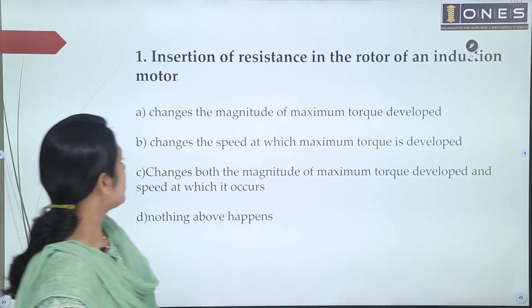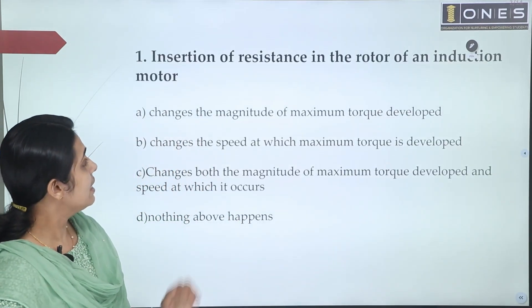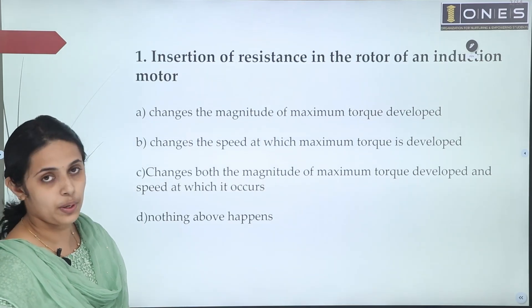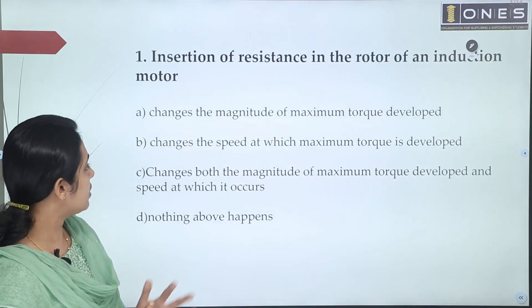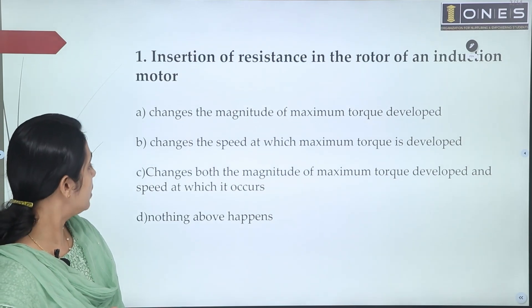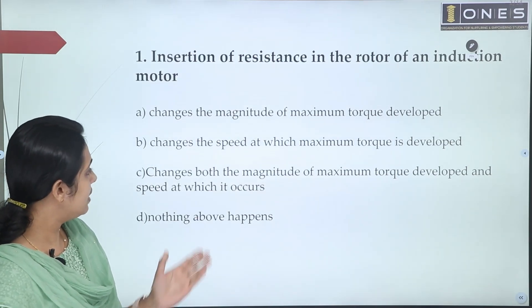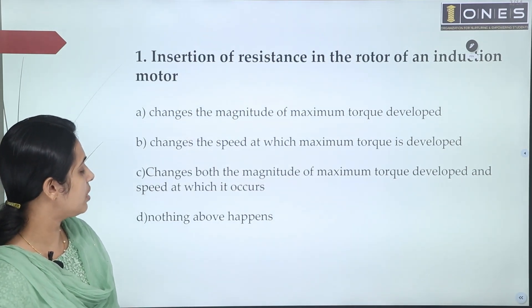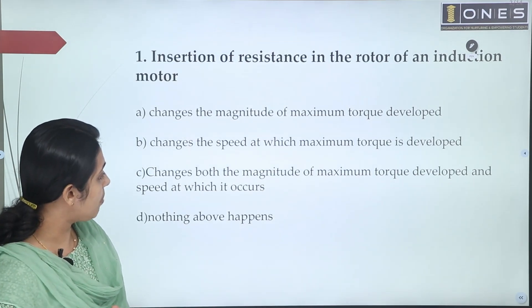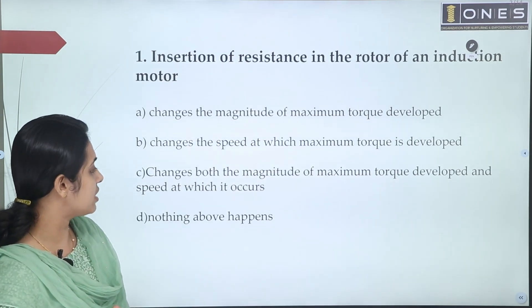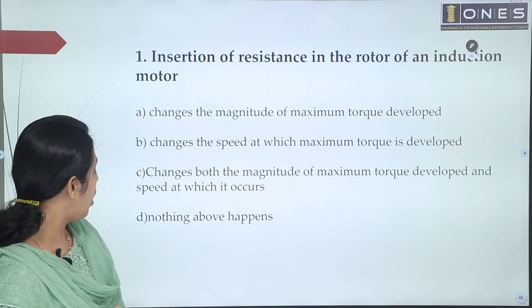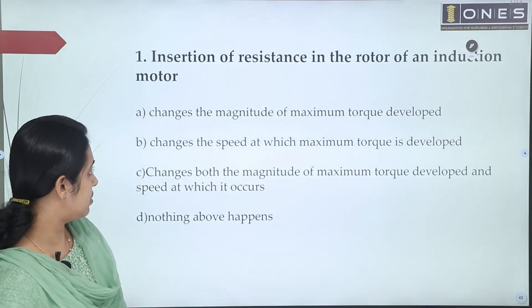The first question is: Insertion of resistance in the rotor of an induction motor. Option A changes the magnitude of maximum torque developed. Option B changes the speed at which maximum torque is developed. Option C changes both the magnitude of maximum torque developed and speed at which it occurs. Option D: nothing above happens.